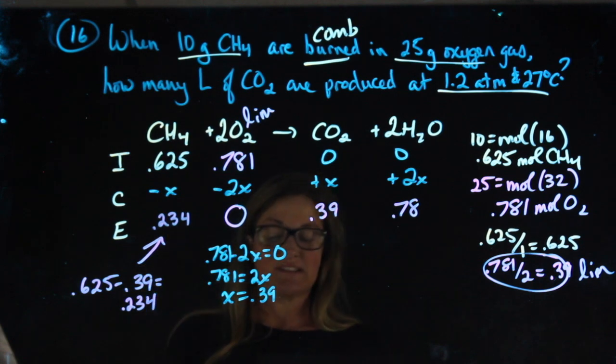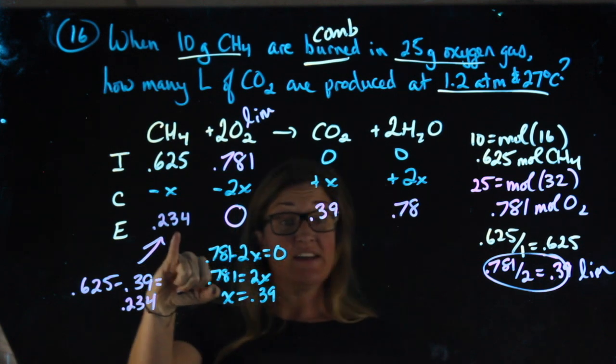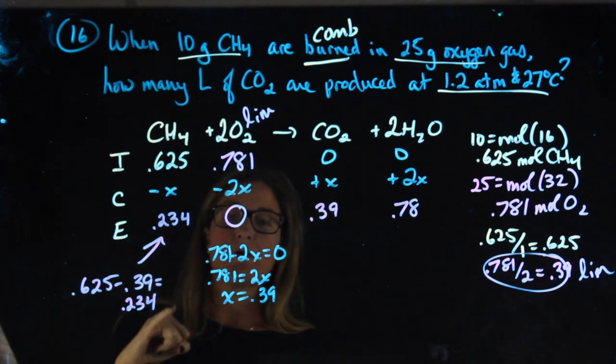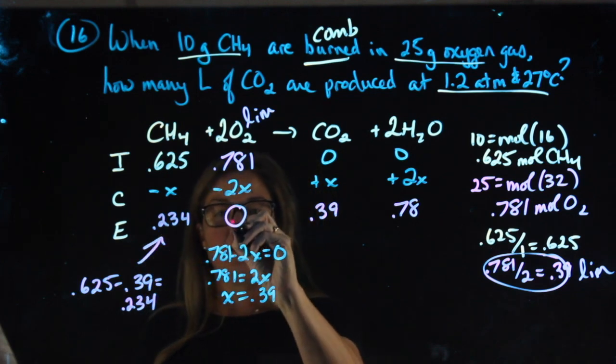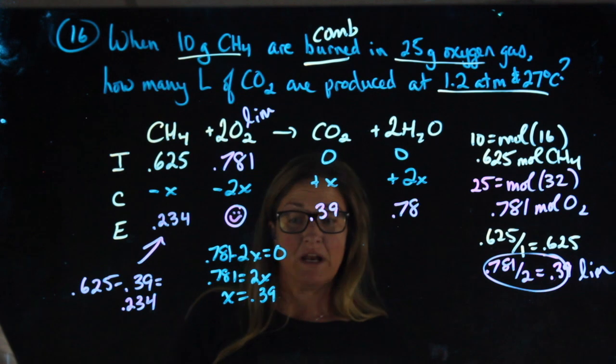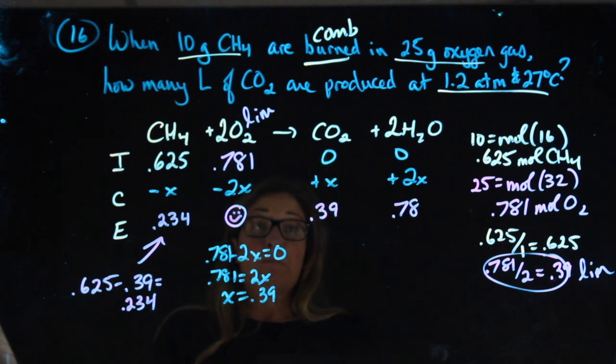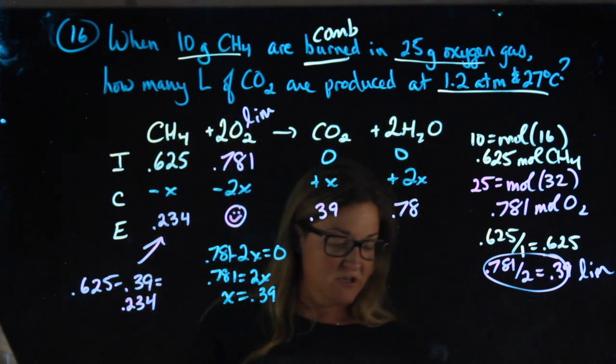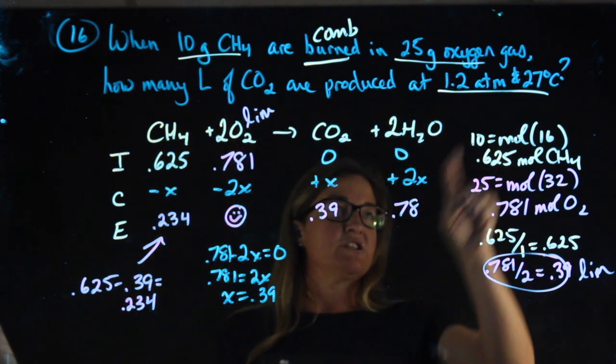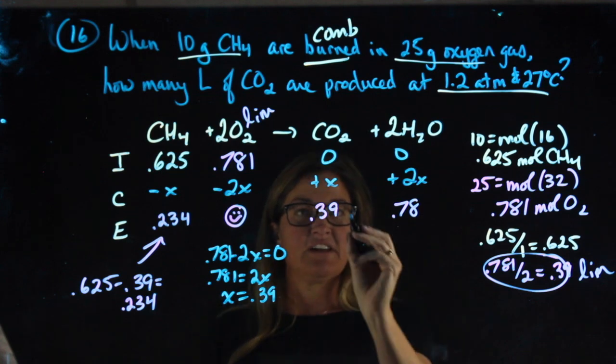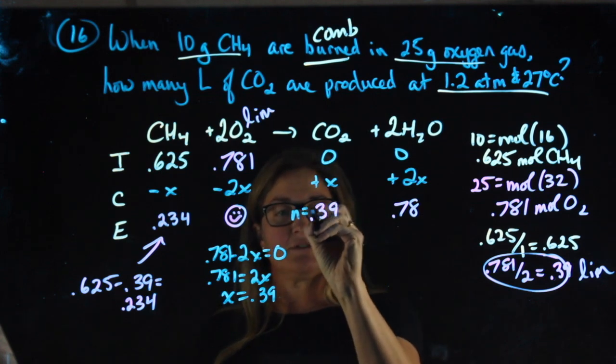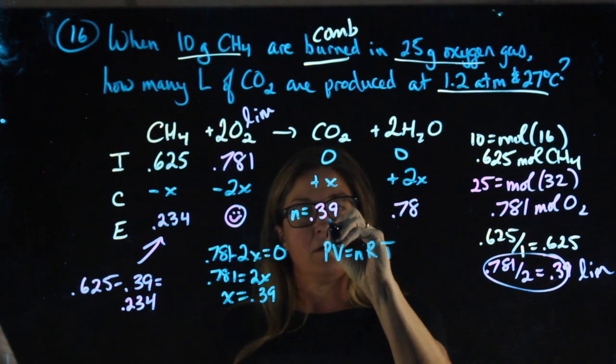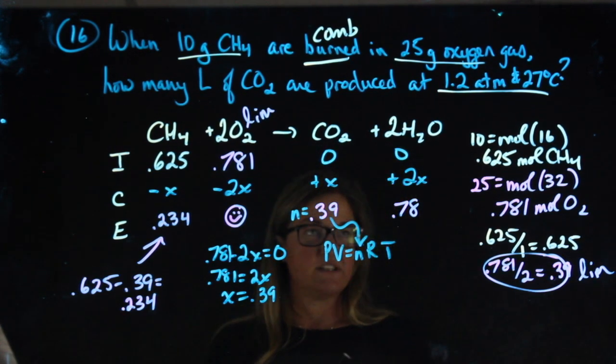No one has asked me how much excess reactant I have remaining in this case, but the ICE chart is done with the question. The question asked me how many liters of CO2 are produced at 1.2 atm and 25 degrees Celsius. These are the moles of CO2. So I'm going to plug 0.39 moles into PV equals nRT.